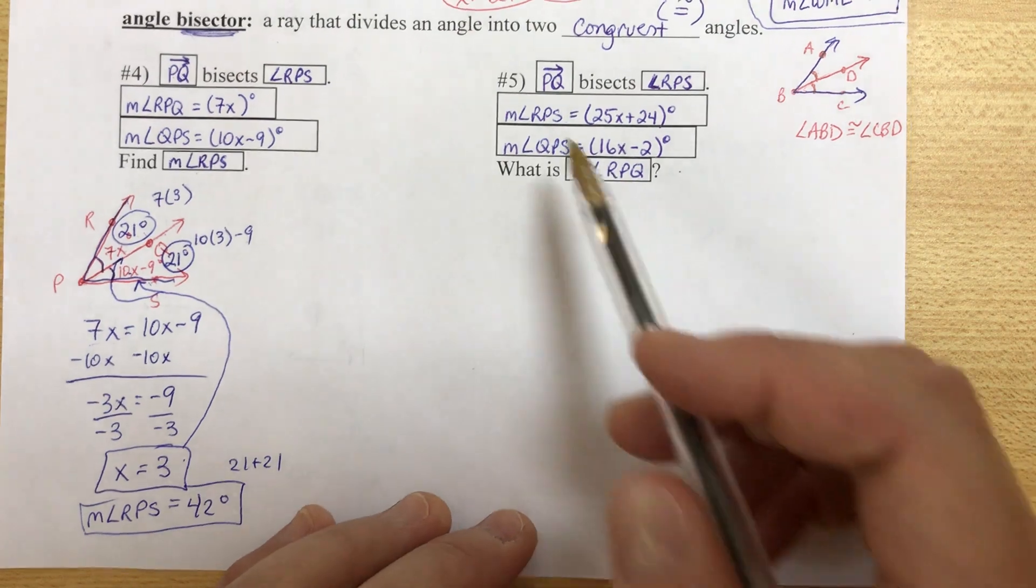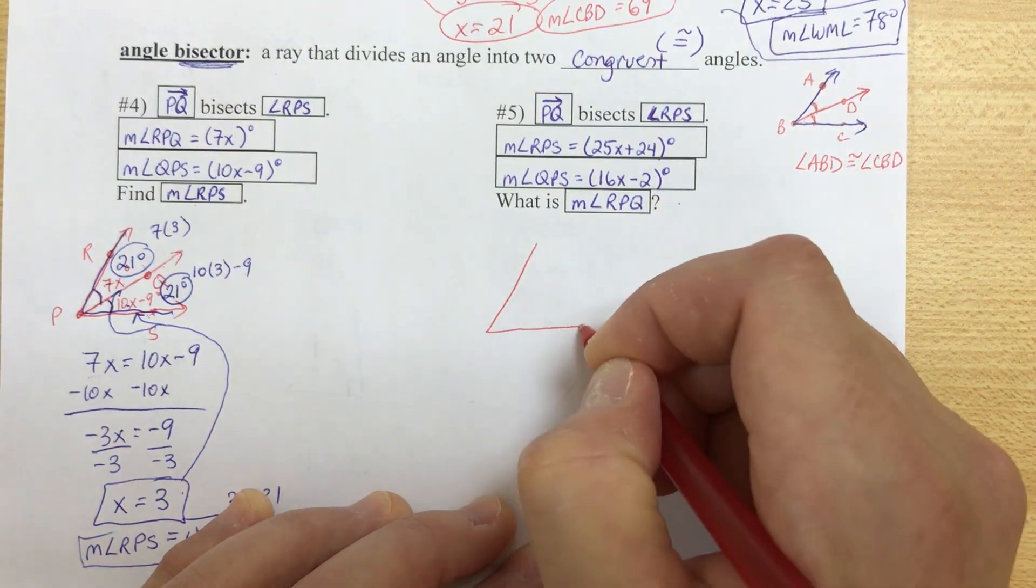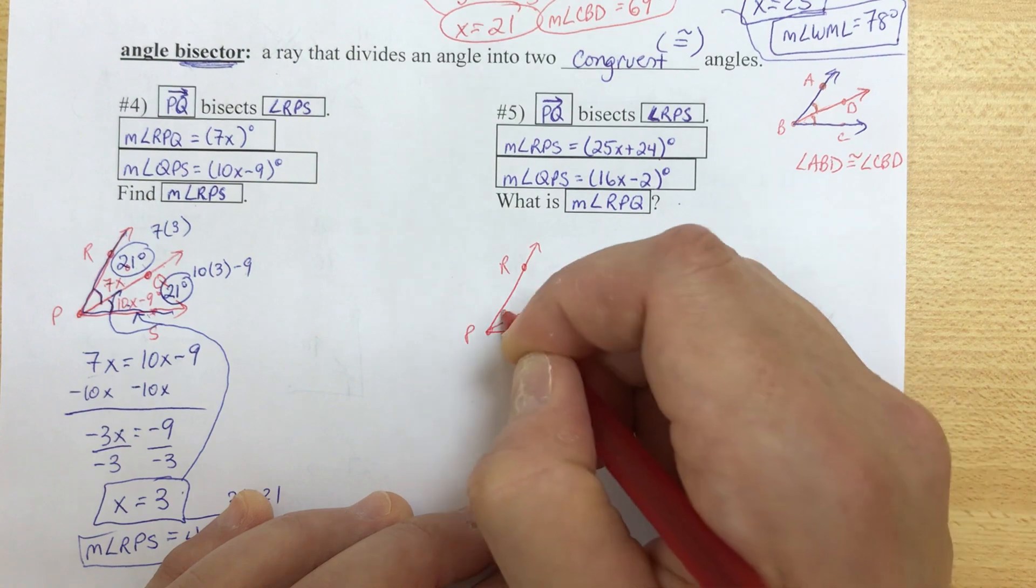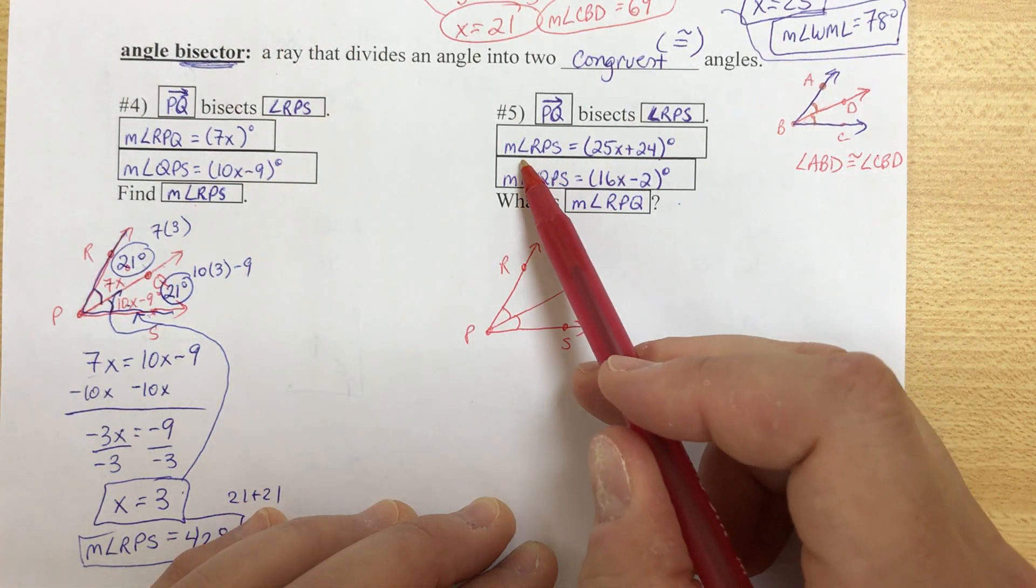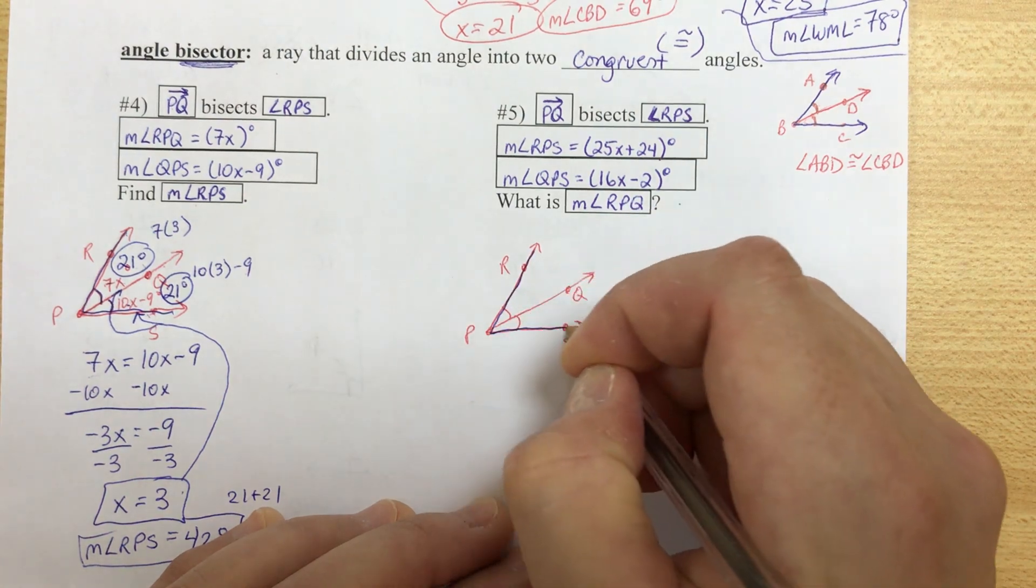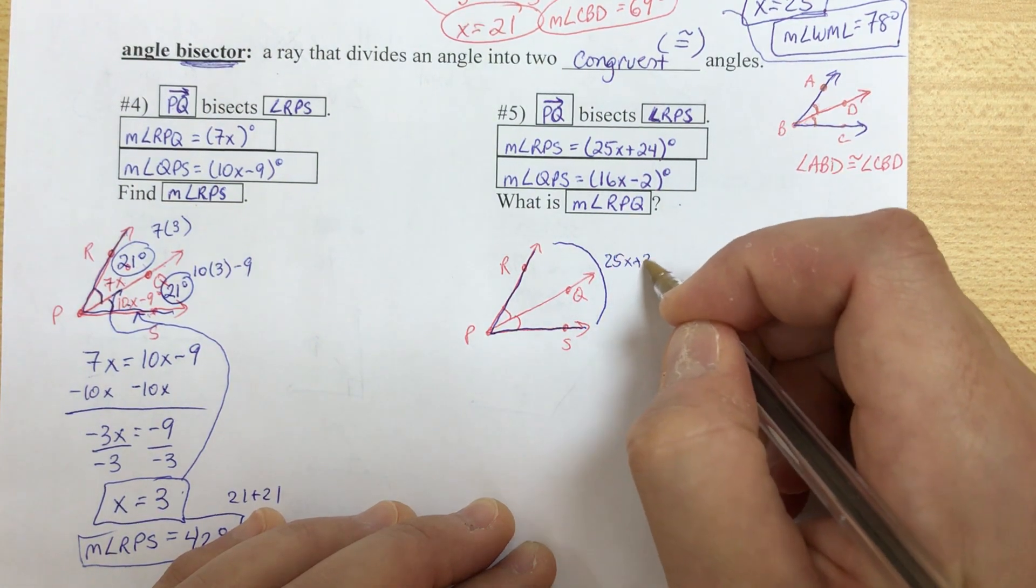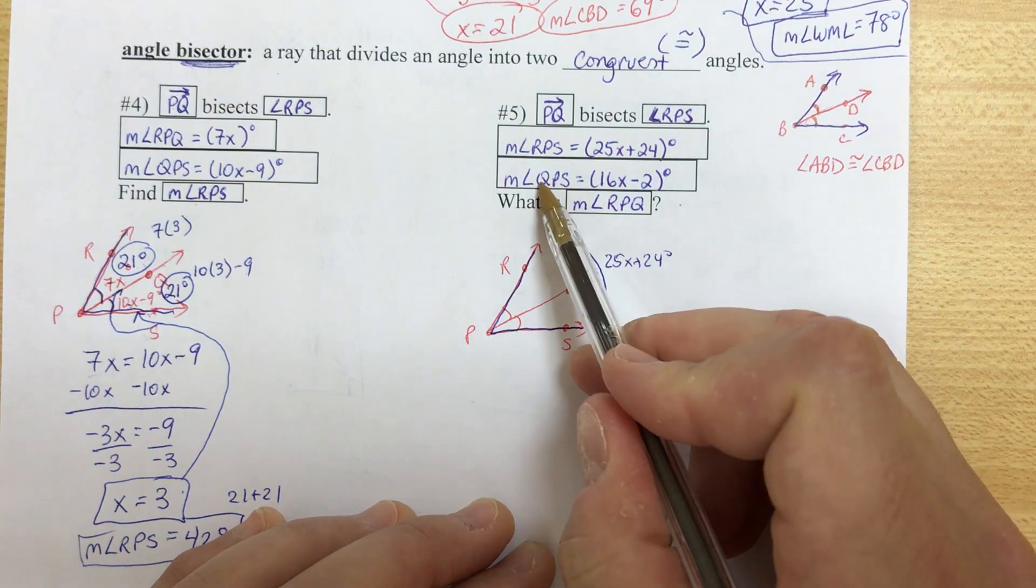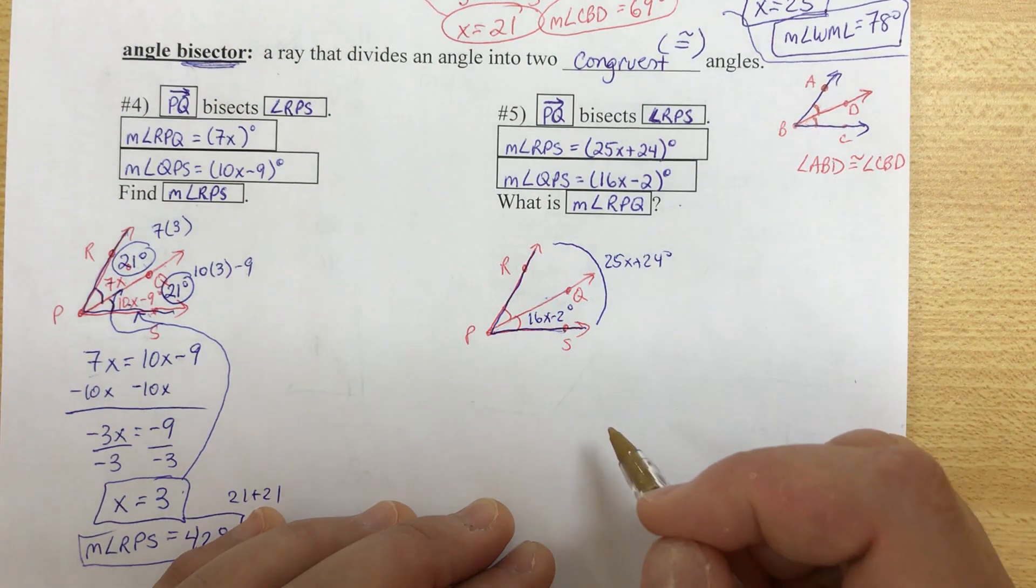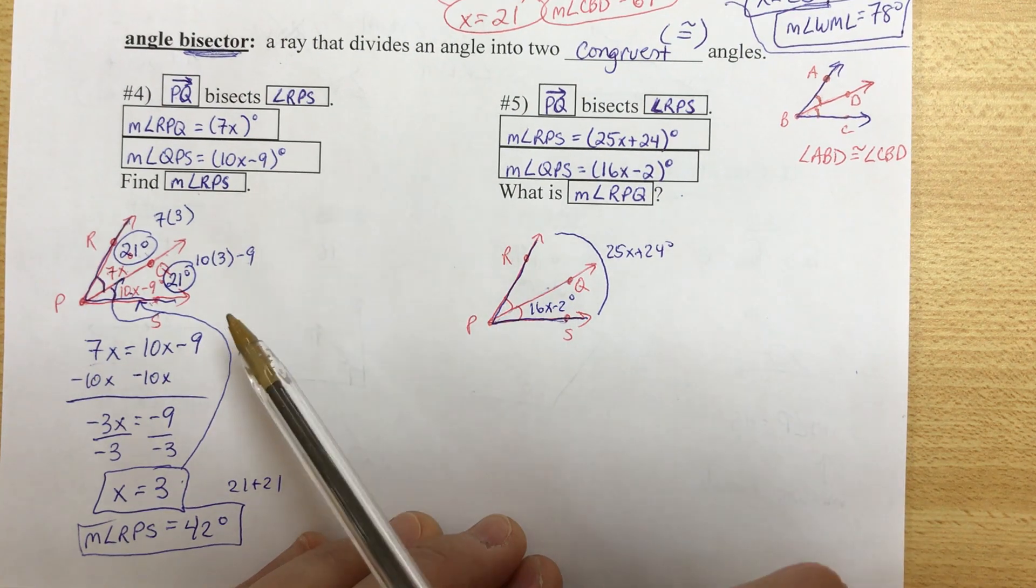All right, we have one last problem here, number 5. It's going to start the same way. Ray PQ bisects angle RPS. Let's go ahead and draw that. I'm going to set up the same picture. But this time the information is different. The measure of angle RPS is 25x plus 24 degrees. Now RPS is the whole thing. So I'm going to draw, I'm going to label this angle out here. I'm going to say 25x plus 24 degrees. That's for this whole thing. Measure of angle QPS, now that's the small one, is 16x minus 2 degrees. What's the measure of angle RPQ? Now this one, this is a different problem. And it's going to be a different kind of equation from number 4.